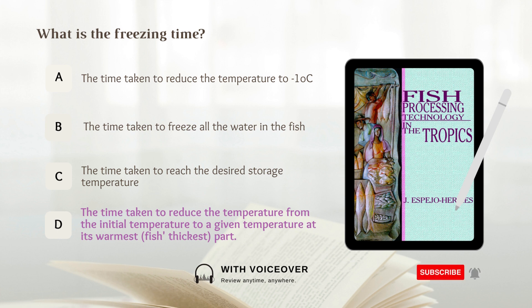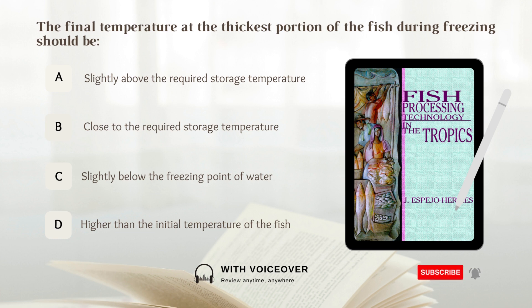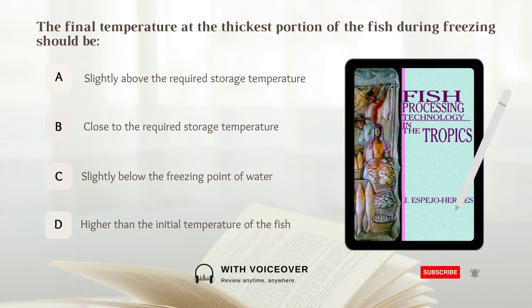Answer: D. Air velocity, or the fish's thickest part. The final temperature at the thickest portion of the fish during freezing should be: A. Slightly above the required storage temperature. B. Close to the required storage temperature. C. Slightly below the freezing point of water. D. Higher than the initial temperature of the fish. Answer: B. Close to the required storage temperature.